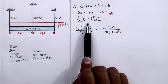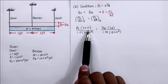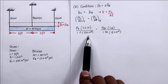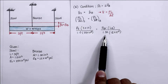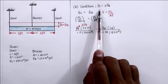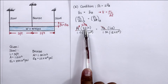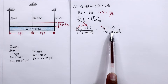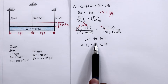Substituting the given values: for steel — force PS, length 3 feet × 12 (to convert to inches), area 1.0 in², E = 29×10⁶ psi; equals for bronze — force PB, length unknown LB, area 1.5 in², E = 12×10⁶ psi. Since the condition states PS = 2PB, we replace PS with 2PB. Since PB is a common term on both sides, it cancels out. Solving for the length of bronze gives 44.69 inches or 3.72 feet.